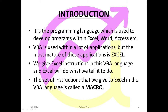We give Excel instructions in the VBA language — we write the code and Excel will do what we tell it to do. The set of instructions that we give to Excel in the VBA language is called a macro. So whatever coding we do is known as a macro. Now there are two ways to record a macro, which we will cover later in the course. We write certain code using VBA language, which is known as a macro, and then it is performed on Excel.